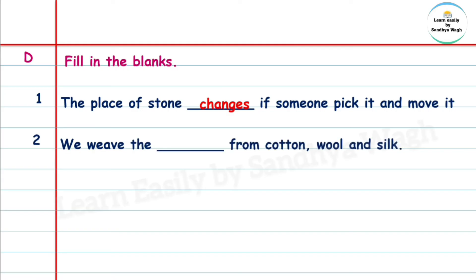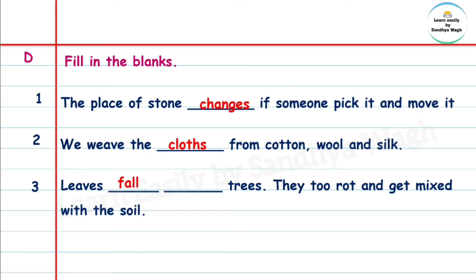Question 3: Leaves fall off trees. They too rot and get mixed with the soil. Question 4: Living things are of two kinds: plants and animals.